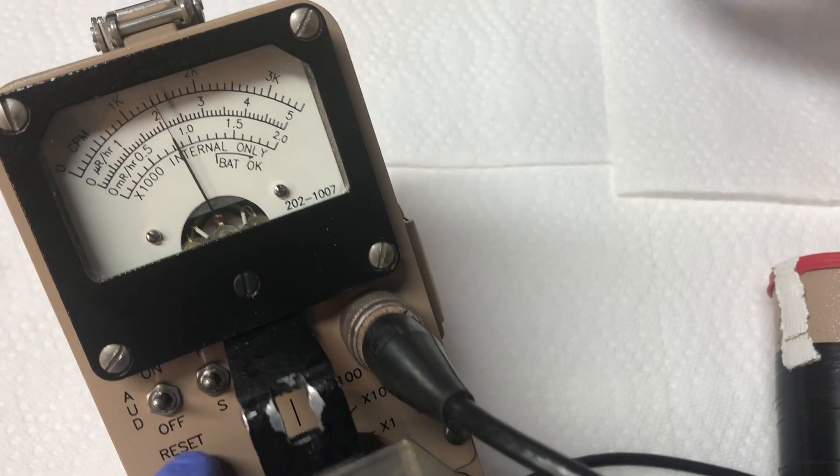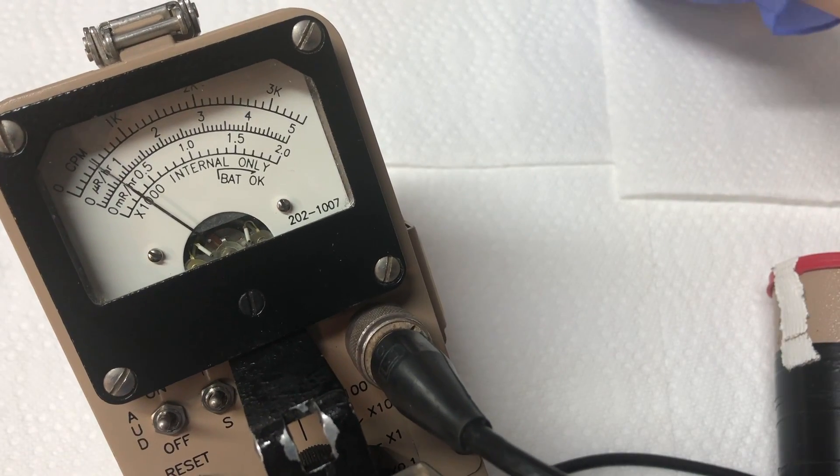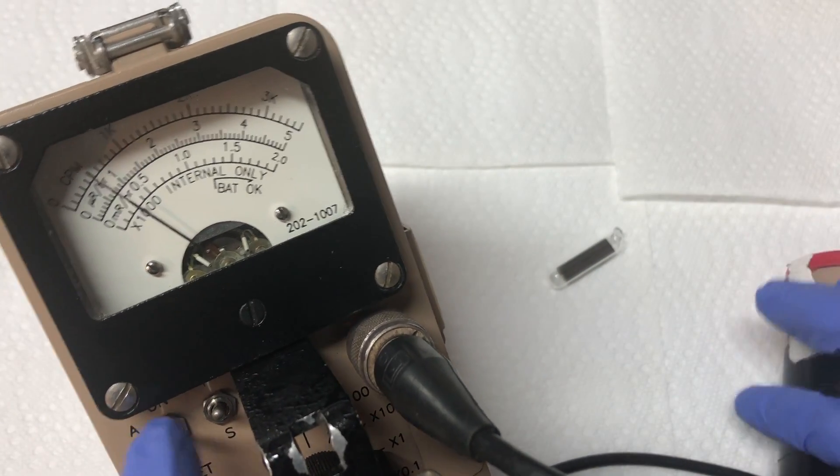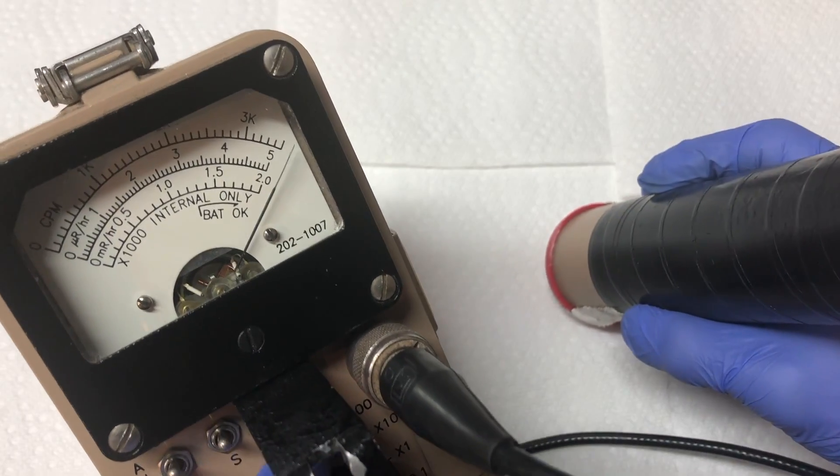When DU penetrator rounds would be fired and hit armor, they would self-sharpen leading to atomization of the metal, allowing DU to be easily breathed in.